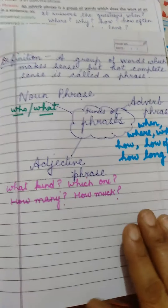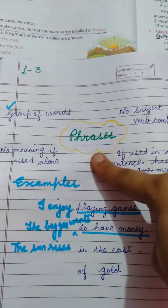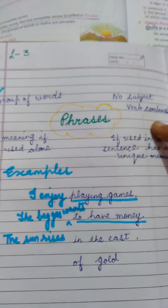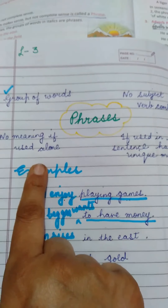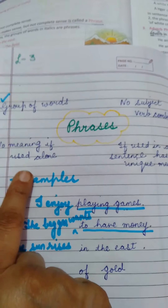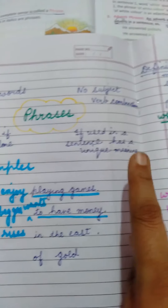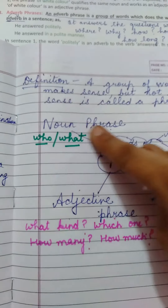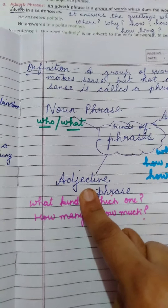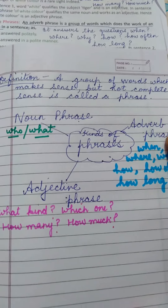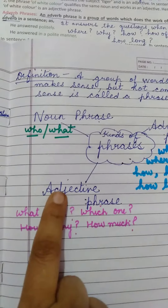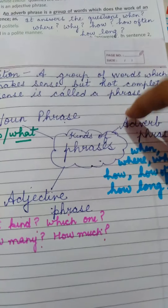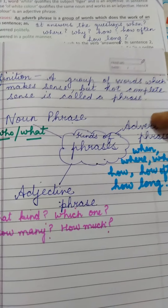So I hope this is now clear. First, we learnt what exactly a phrase is — a group of words not having any subject-verb combination, and if used alone it does not make complete sense. But if used in a sentence, it has a unique meaning. When acting as a noun it is a noun phrase, as an adjective it is an adjective phrase, and as an adverb it is an adverb phrase.